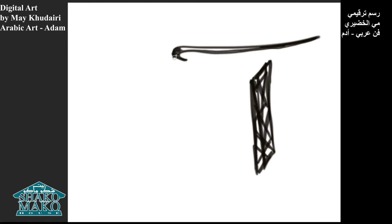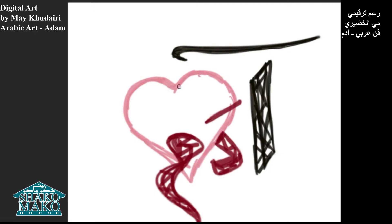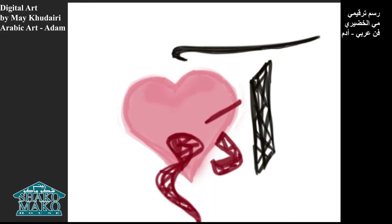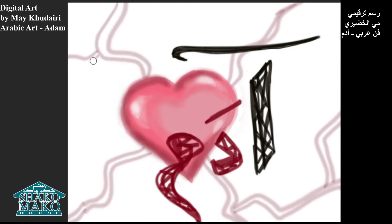If we look at the black line over here, we see the letter ELIF. As we know in the alphabet, ELIF is just like the letter A. It is the alpha, it is the first, it is the leader, it is the number one, it's the strongest, it is the first in the alphabet. It even looks like number one in the Arabic script.